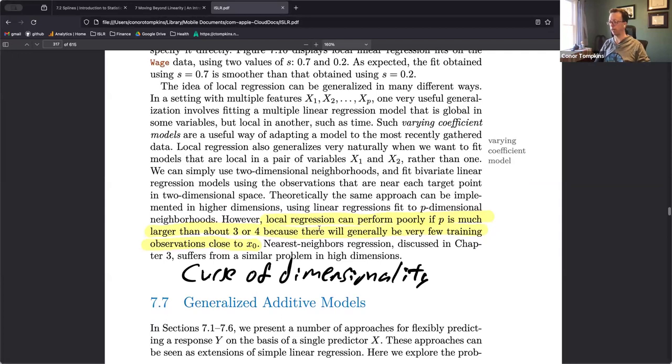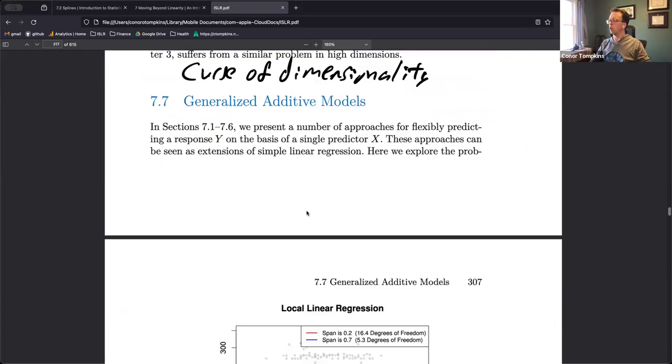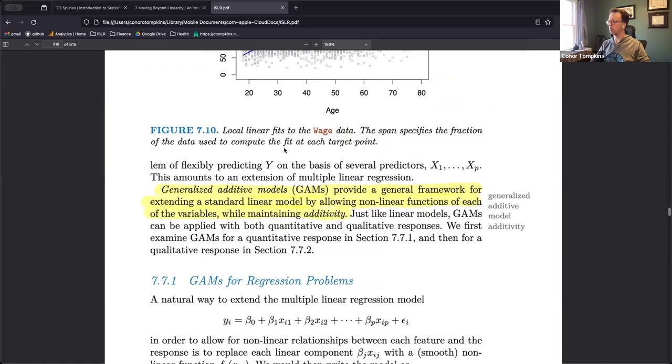It'll be more wrinkly and reactive to local patterns, whereas if the span is one it'll look at the entire range of the data and basically fit a straight line. They say this can perform poorly if you have multiple predictors, more than three or four, because there's going to be fewer training observations close to any given point. That's kind of the curse of dimensionality. The more predictors you have, the more ways there are for that observation to be different than others.